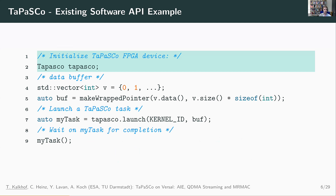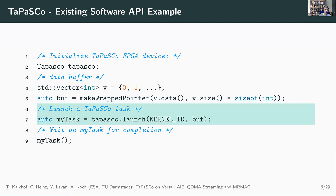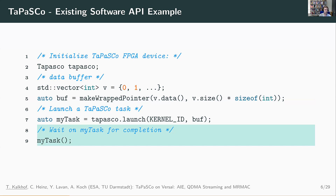Our software API is very simple. You start by initializing your Tapasco FPGA device object. Then you usually want some data buffers as input or output for your accelerator — for example, you use a standard vector and then use the make_wrapped_pointer call to tell Tapasco where the data is lying and how much data you want to transfer. This wrapped pointer you then pass to the Tapasco launch call together with the kernel ID you want to use. Tapasco will handle the data transfers to device memory and start your PE. Then you wait for the PE to finish, and Tapasco will automatically handle the device transfers back to host memory.